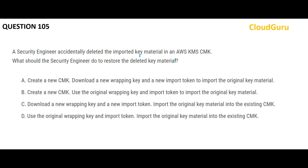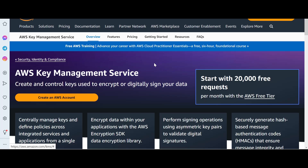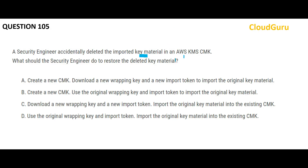The next question is about imported key material. Imported key material means the key is not generated within KMS — you are importing it from outside. Think of it like importing a car: if that car is stolen, you need to retrieve it. Option D says you use the original wrapping key and import token, but those have been deleted, so this will not work.